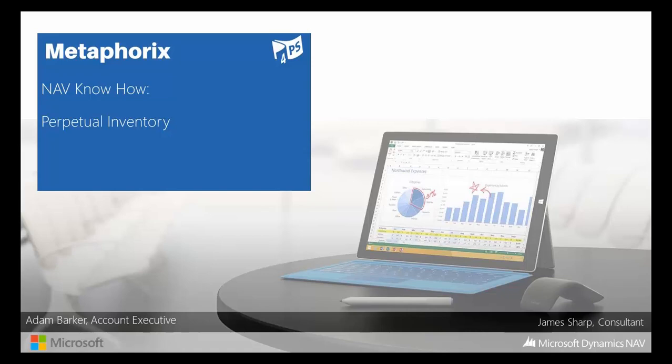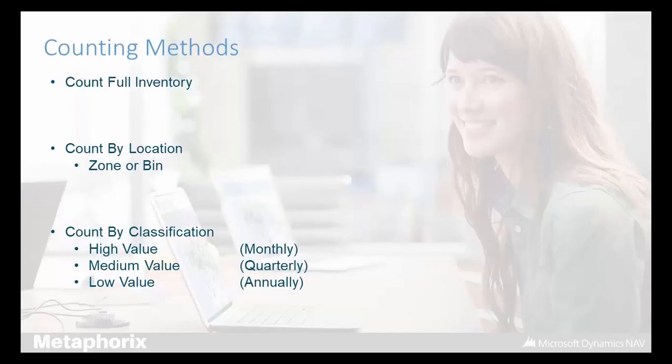In this webinar we're going to be covering perpetual inventory — the different ways you can run a stock take. If you've got lots of items, things can go missing or get broken over time, so businesses do stock takes annually, quarterly, monthly — however often they want. There are three ways you can count: you can count your full inventory, count by location such as a zone or bin, or count by classification, where you break items into categories like high value, medium value, and low value, and assign each category a count frequency.